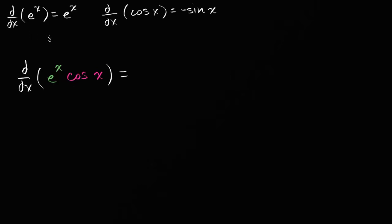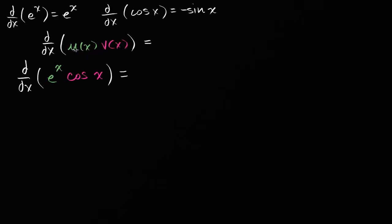Let me write down the product rule generally first. If we take the derivative with respect to x of the first expression — we could call this u of x — times another expression, v of x, this is going to be equal to the derivative of the first expression, u prime of x, times just the second expression, v of x.